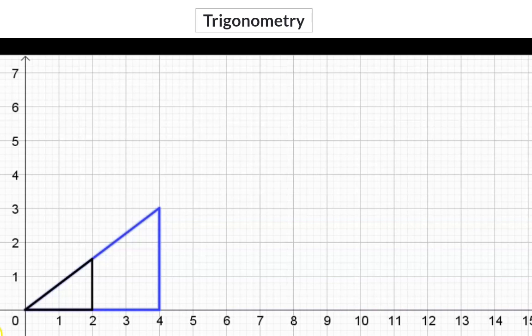Here, we have two similar triangles because their angles are exactly the same size. And the black triangle's sides have been doubled to form the blue triangle.